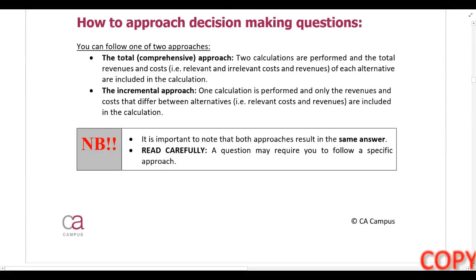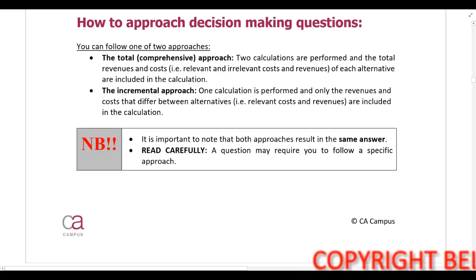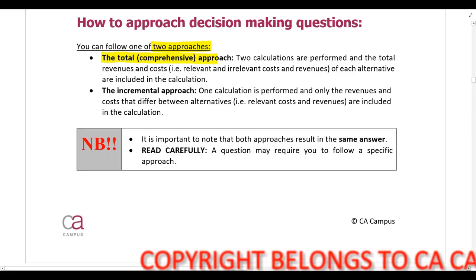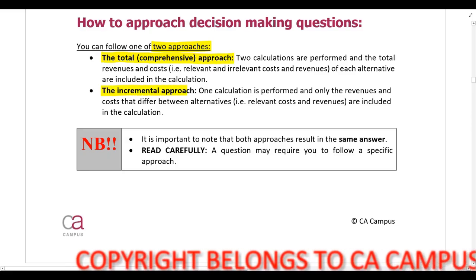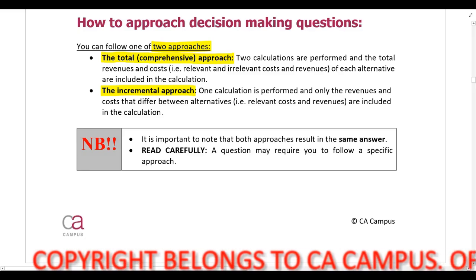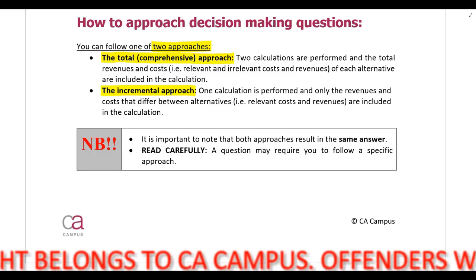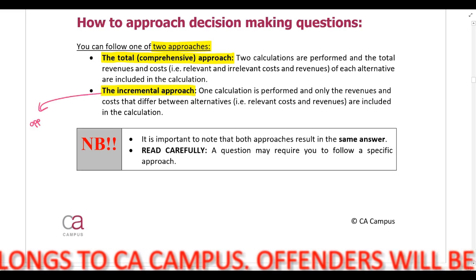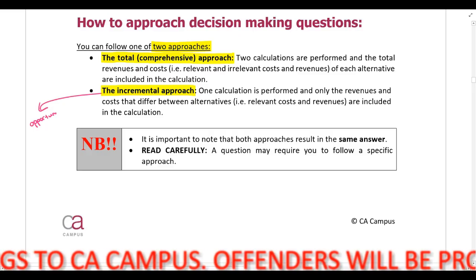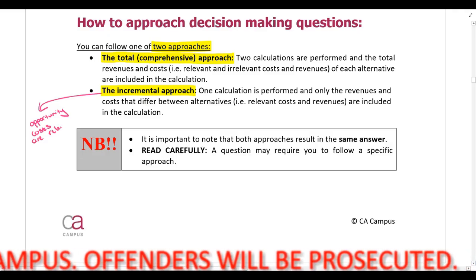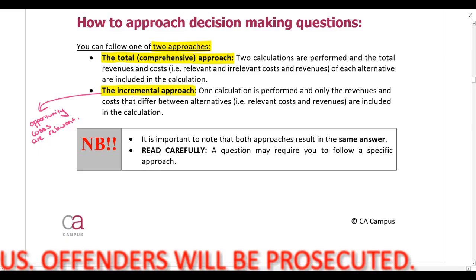We are now going to look at how you should approach decision-making questions. We can do our calculation in one of two ways: either we can use the total or comprehensive approach, or we can use the incremental approach. Opportunity costs are only relevant when we are using the incremental approach.